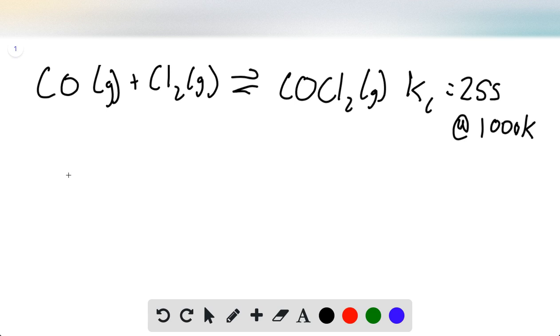We are given initial concentrations of CO and Cl2, and we assume that the initial concentration of COCl2 is zero. We want to find the equilibrium concentrations.